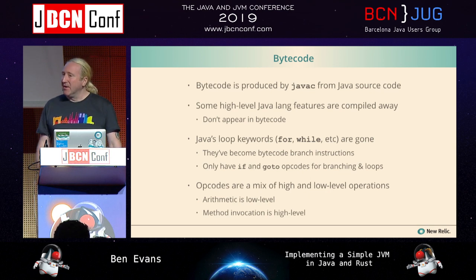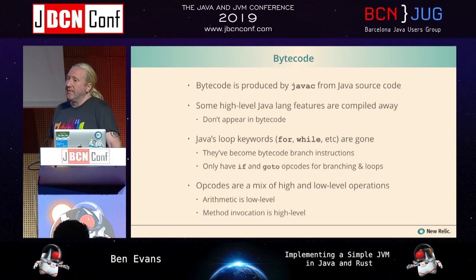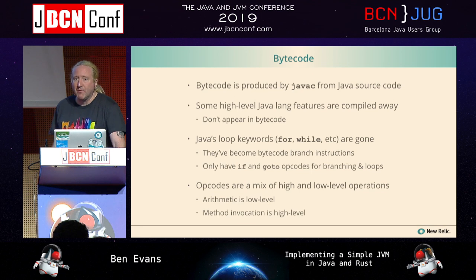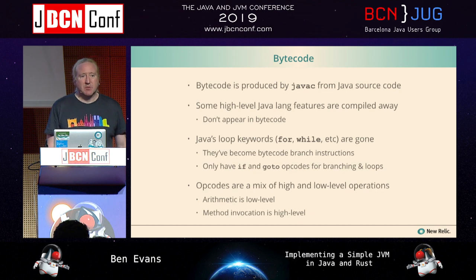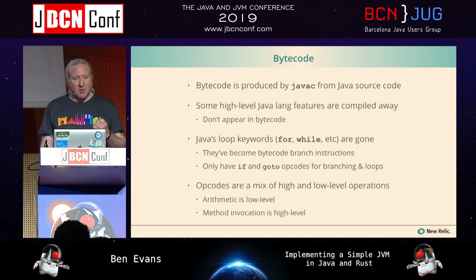Opcodes in JVM bytecode are a mixture of high-level and low-level operations. Integer arithmetic is a very low-level operation — it directly translates into machine opcodes very easily. Method invocation, on the other hand, requires fairly sophisticated runtime support and is one of the more complicated things we can do, yet it's still represented as a single instruction in the bytecode — invoke virtual, invoke special, or even invoke dynamic.